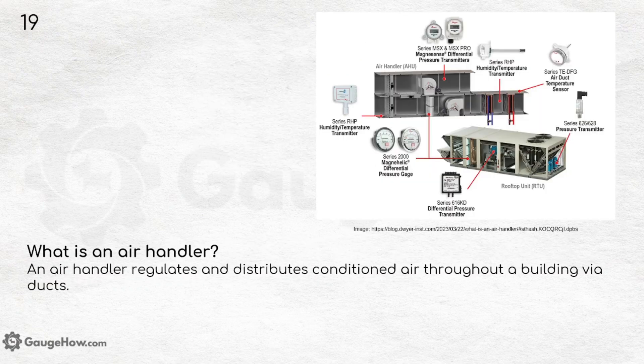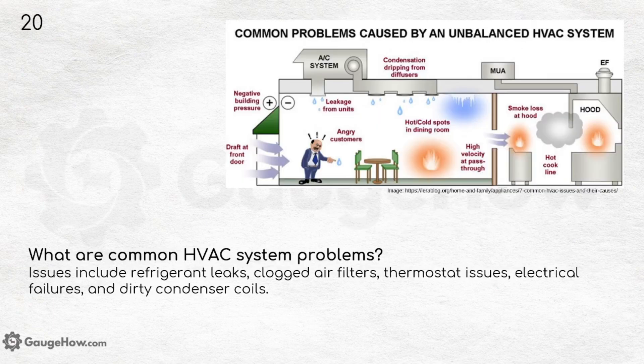What is an air handler? An air handler regulates and distributes conditioned air throughout a building via ducts. What are common HVAC system problems? Issues include refrigerant leaks — which you might also see in your refrigerator — clogged air filters, thermostat issues, electrical failures and dirty condenser coils.